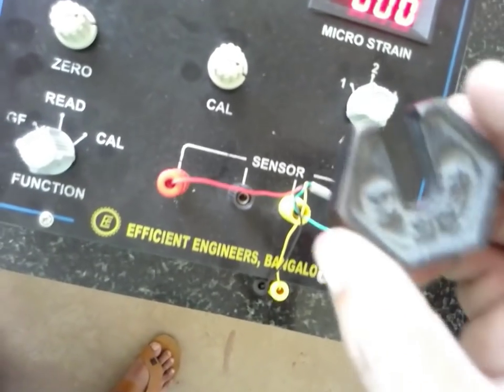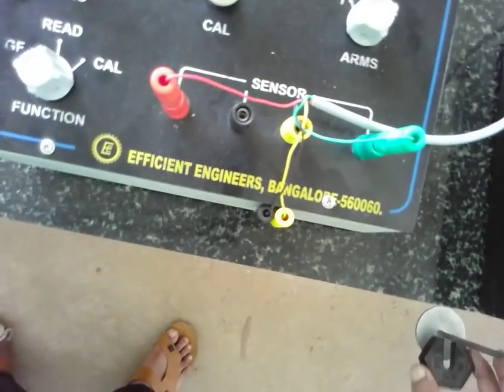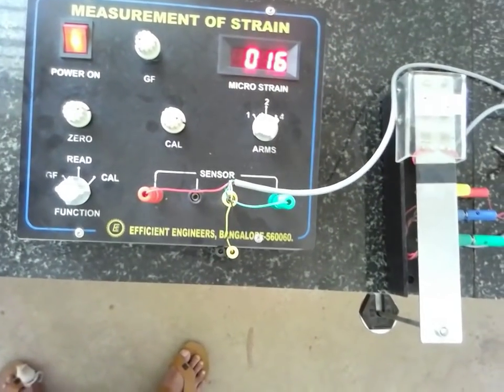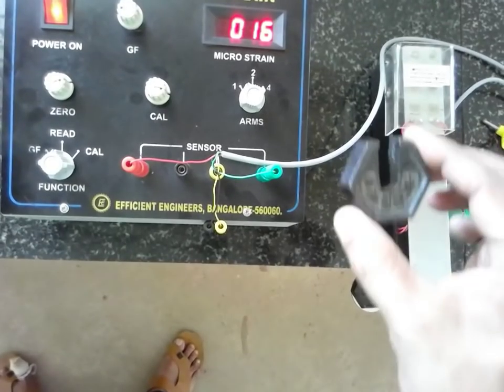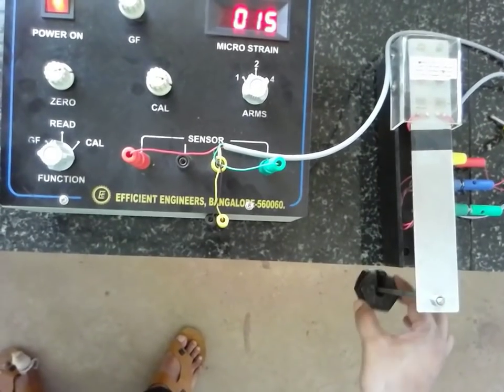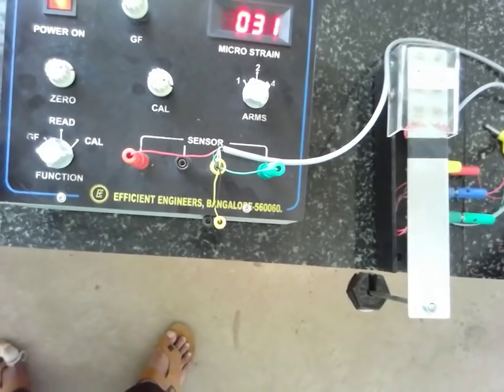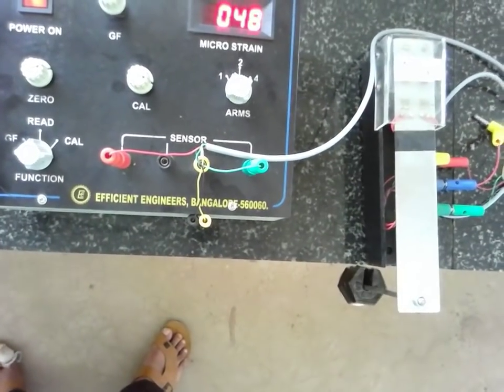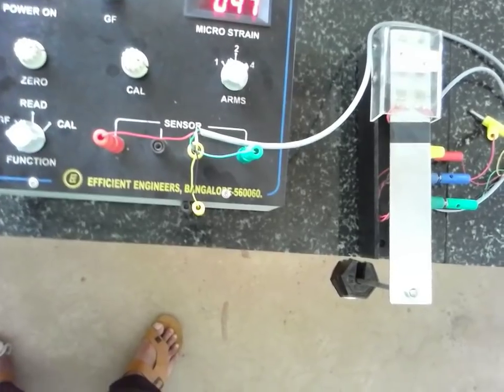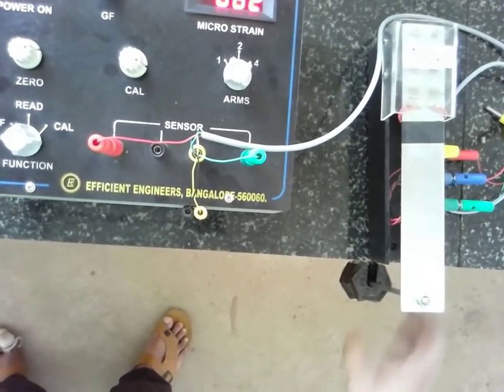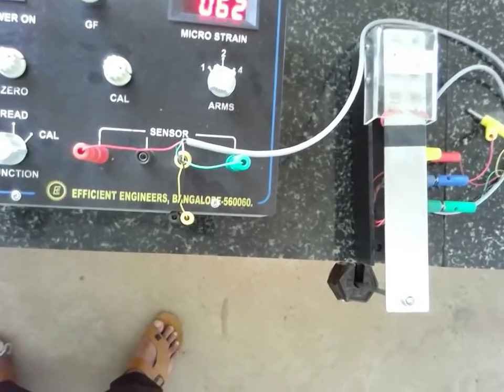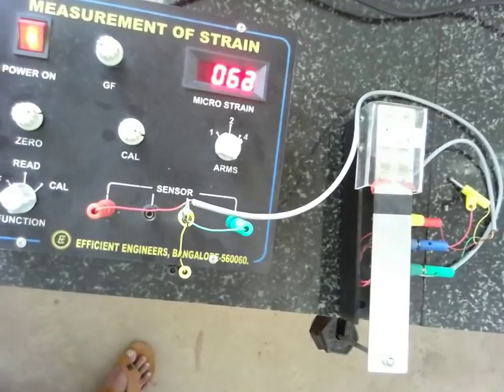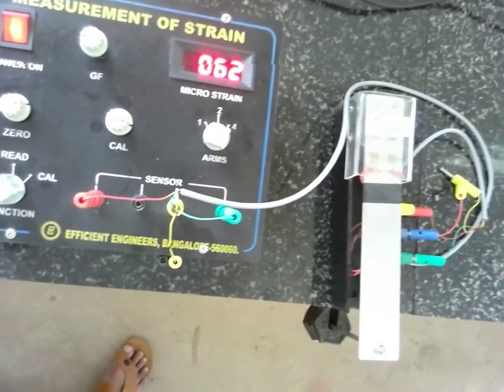Now place the weight into the pan. This is 0.1 kg, place into the pan. The reading will be 0.16. For 0.2 kg, the reading will be 32. For 0.3 kg, the reading will be 48. For 0.4 kg, the reading will be 63. In this way the experiment has to be carried out for measurement of strain for quarter bridge.